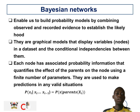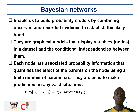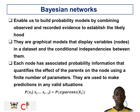For Bayesian networks, they build probability models by combining observed and recorded evidence to establish a likely outcome. They are graphical models that display variables in the form of nodes in a dataset and the conditional independencies between them. Each node has associated probability information that qualifies the effect of parents on the node, using a finite number of parameters to make predictions. A given node and its parent allow you to derive its probability given that the parent is as required.